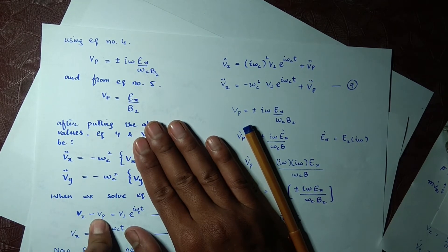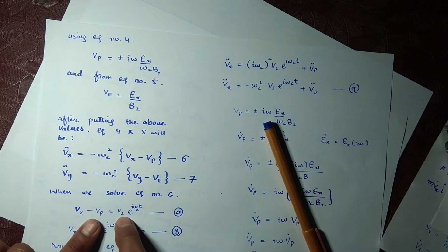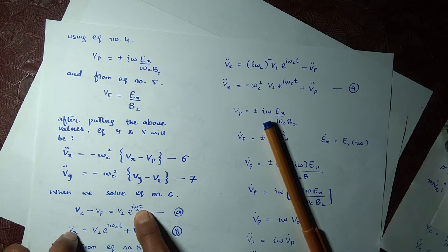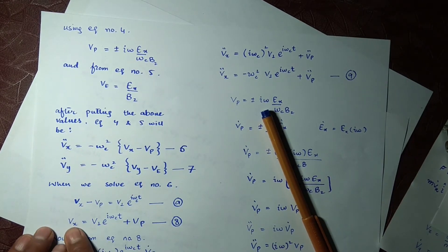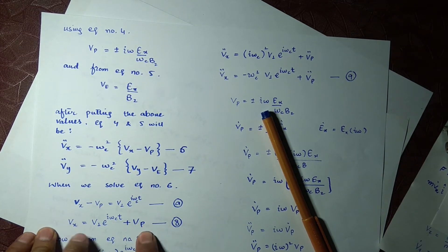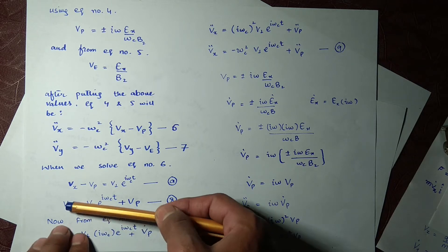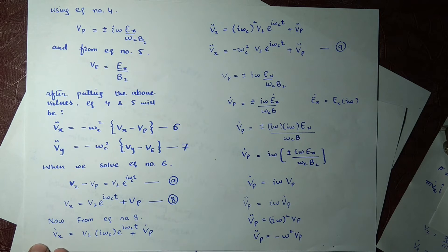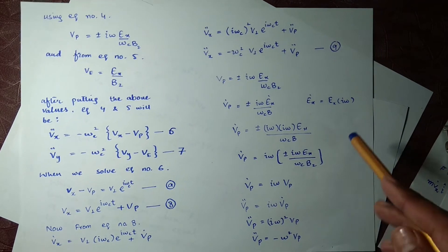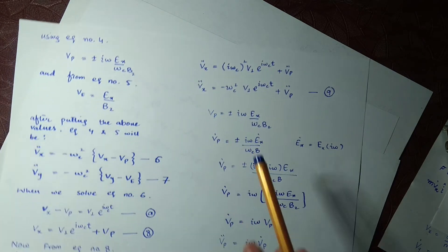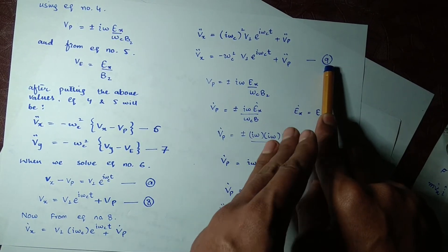Since we now have v_p in the solution, we put v_p here as well, and this v_p equals v_⊥ · e^(iω_c t). This term is additional compared to before. So v_x now has an additional v_p term — naming this as equation 8. Taking the time derivative of equation 8, v_x dot contains the term iω_c · e^(iω_c t) and a v_p dot term.